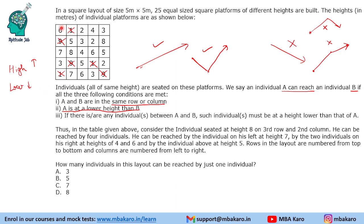Now we look at each person. The value 6 can be reached by 1 and also by 2 going through 1, so 6 is not that person. The value 2 can be reached by only 1 — so 2 is one such person. The value 4 can be reached by 2 and 3. Then 5 can be reached by 1 and 3. The value 8 can be reached by 2, 3, and 5. Then 7 can be reached by 3 only — so 7 is one such person.